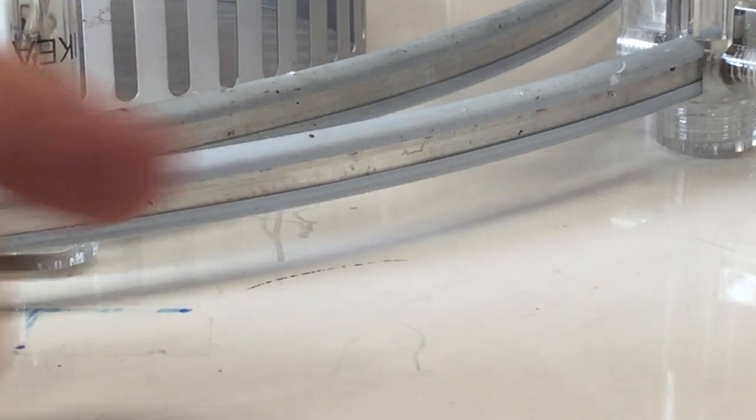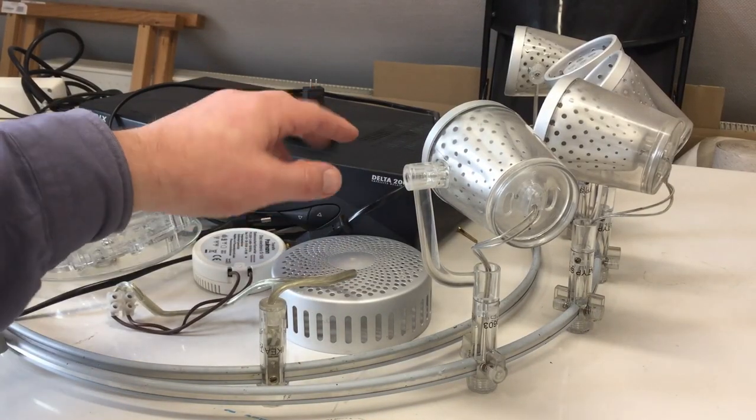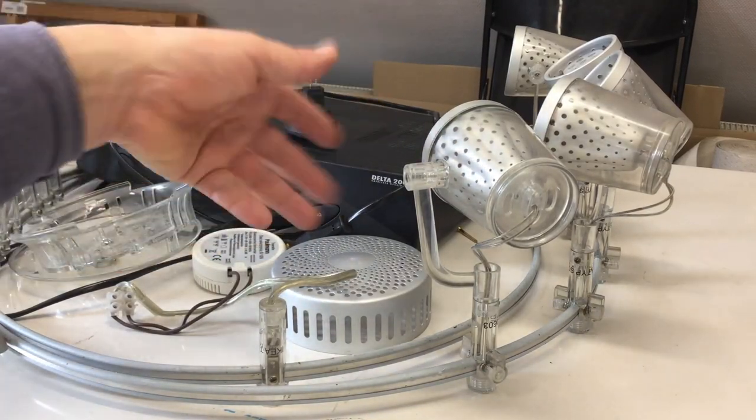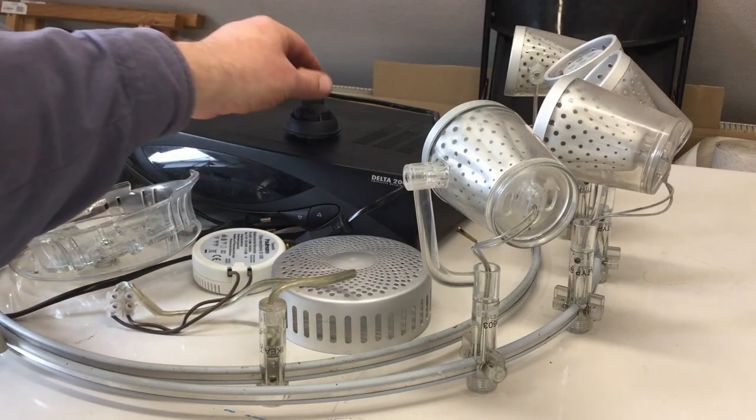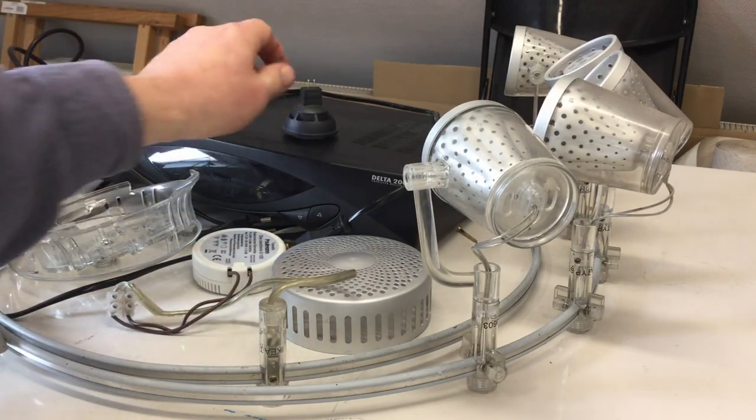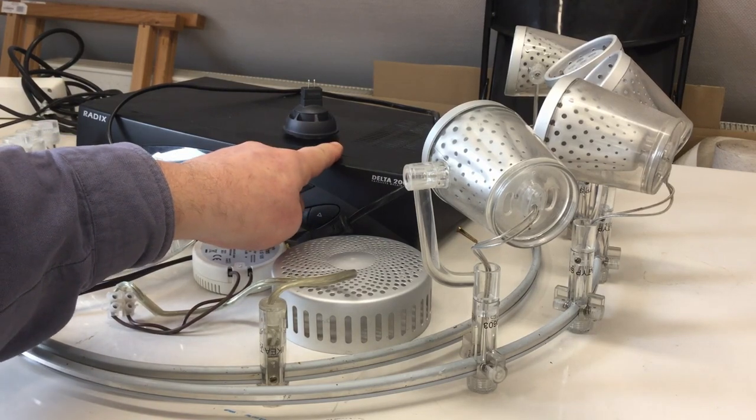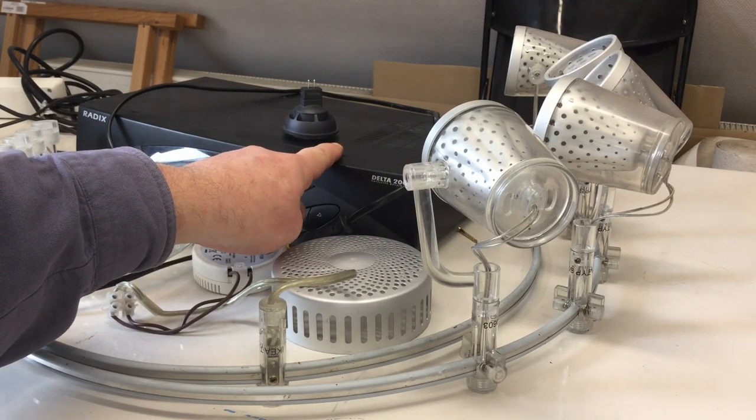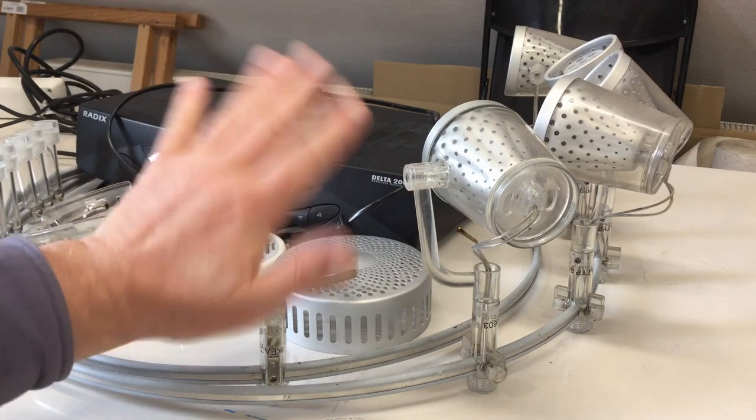That was today's scrap heap scavenge, and obviously some teardowns coming up. That brand Philips LED light bulb and that Radix Delta analog satellite receiver. Till then, bye.